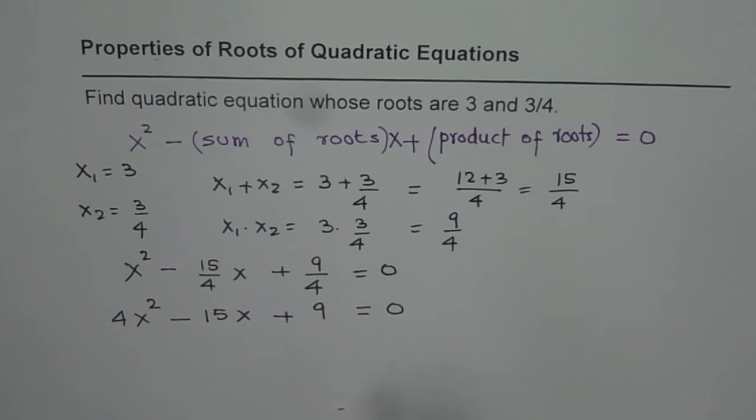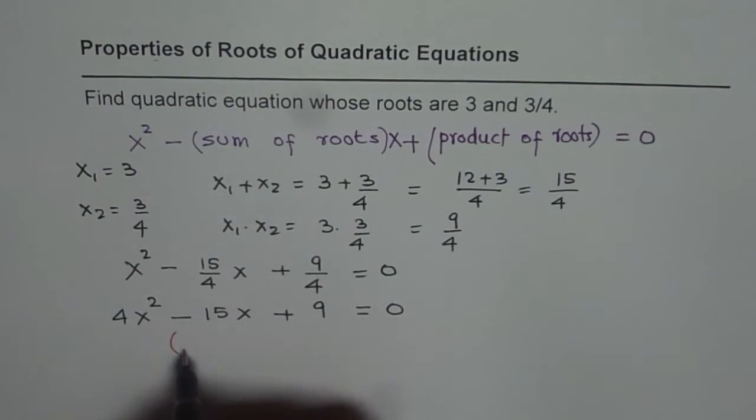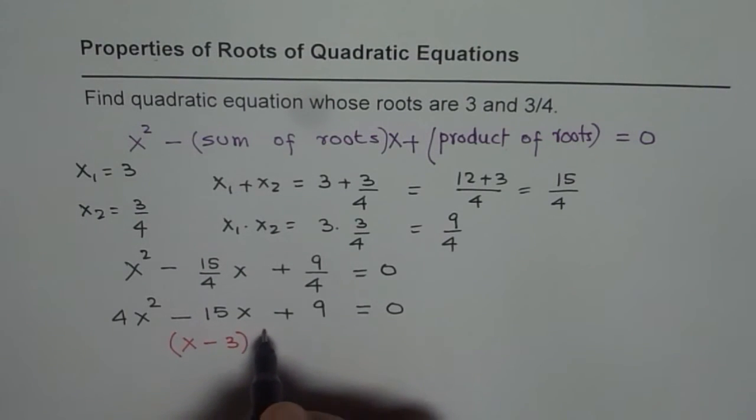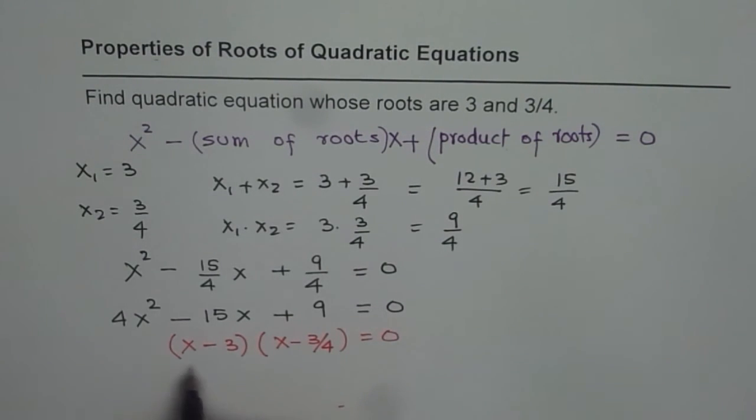Of course, you know another alternative way of doing it. If the roots are given to us, we could have also written the equation starting with factors, that is x minus 3 times x minus 3 over 4 equals to 0. So when you expand it you can also get the answer.